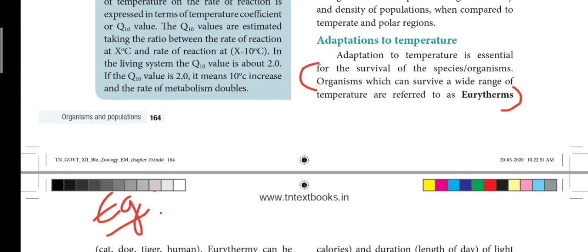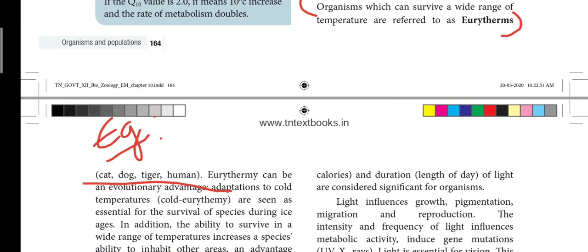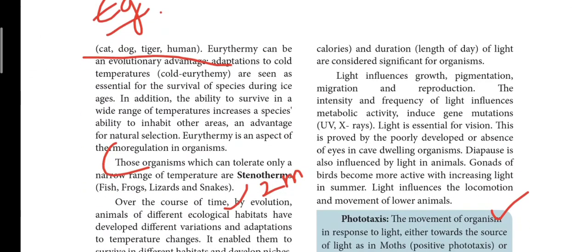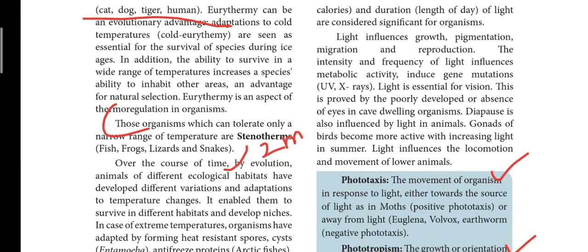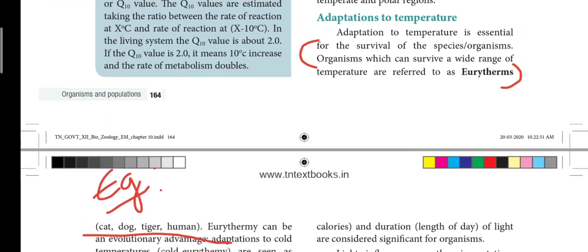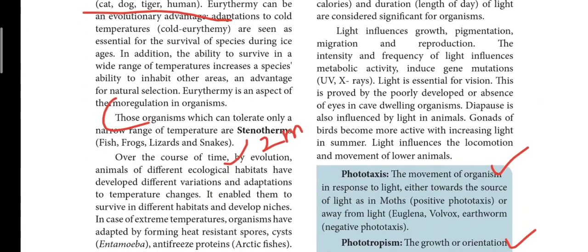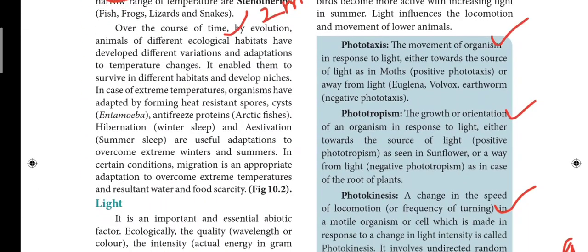From book-inside: what are eurytherms? Eurytherms are organisms which can survive a wide range of temperatures. Examples: cat, dog, tiger. Stenotherms are organisms that can tolerate only a narrow range of temperature — for example, animals that survive only in winter. Examples include fish, frog, lizards, and snakes. So differentiate between eurytherms and stenotherms — this is an important question.